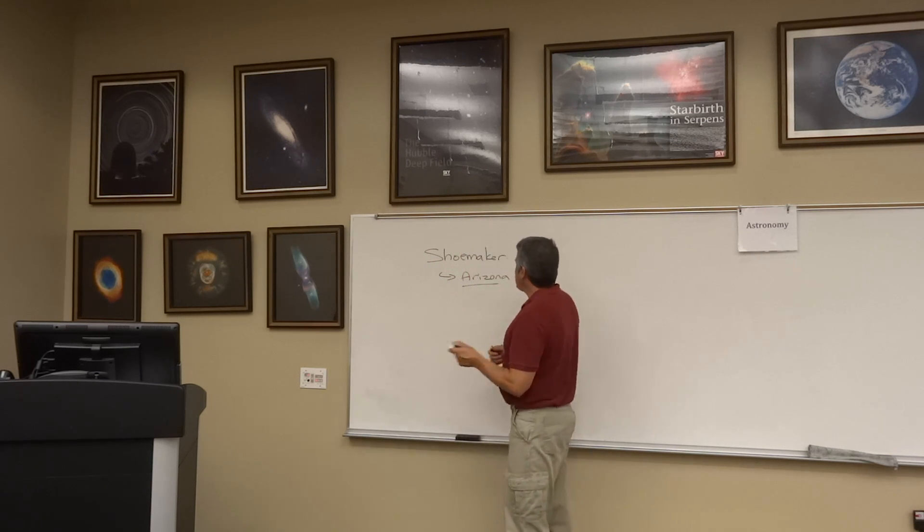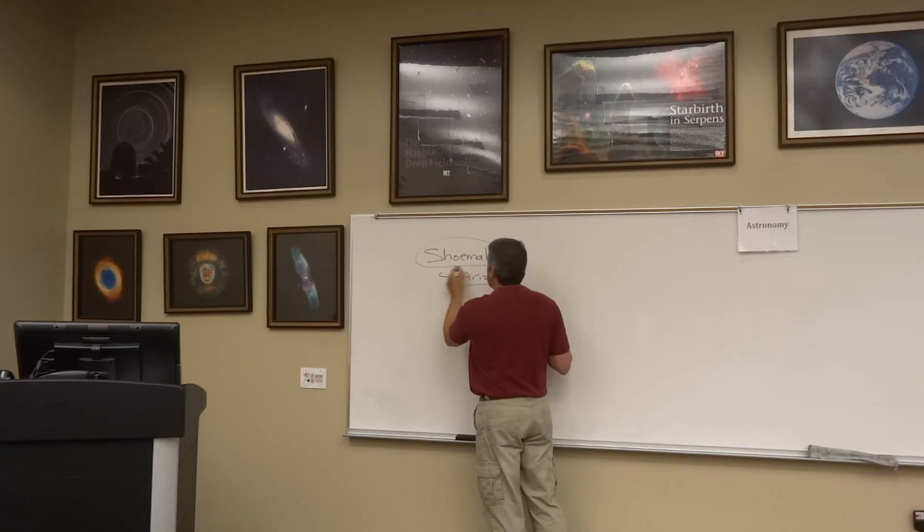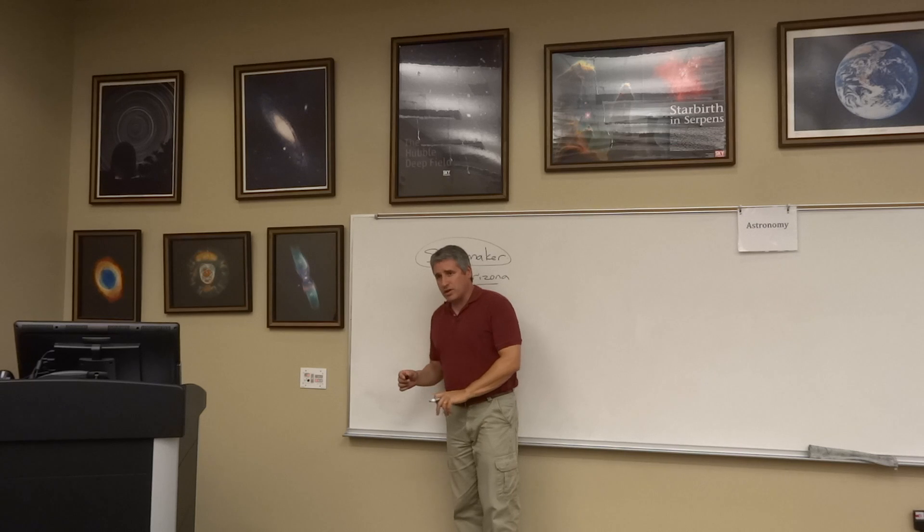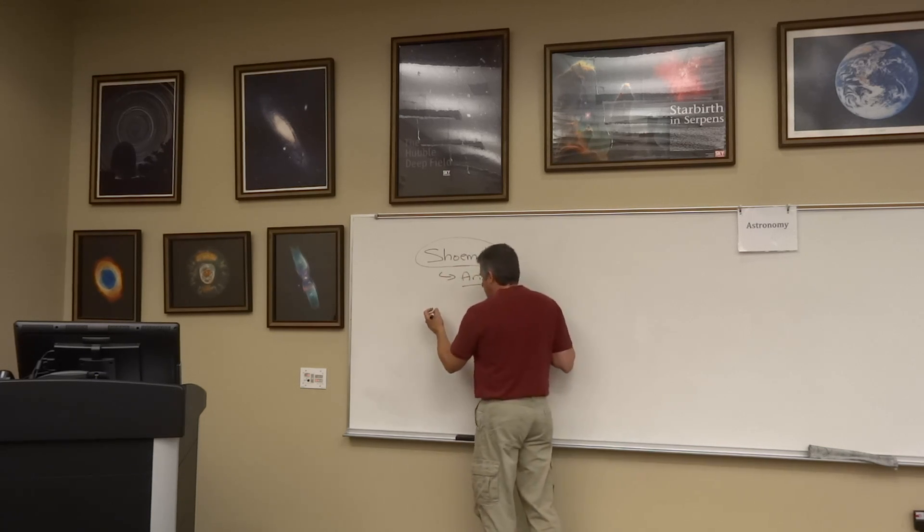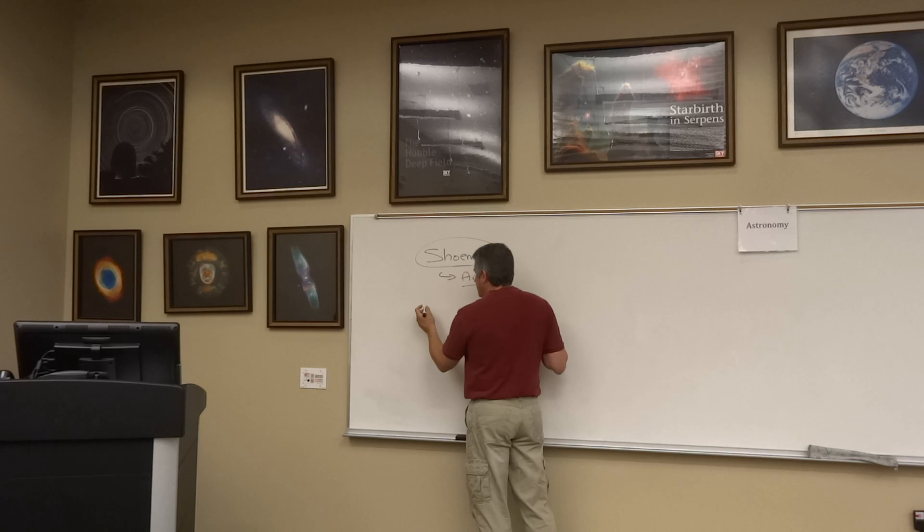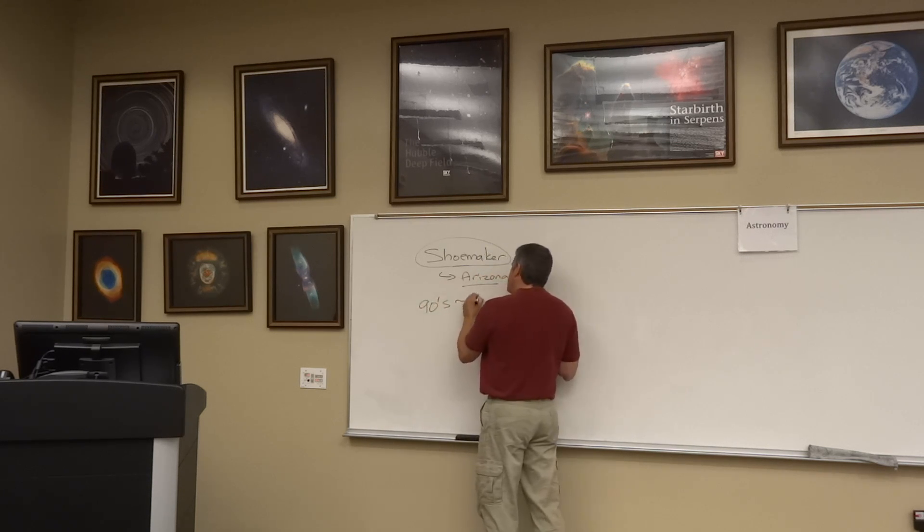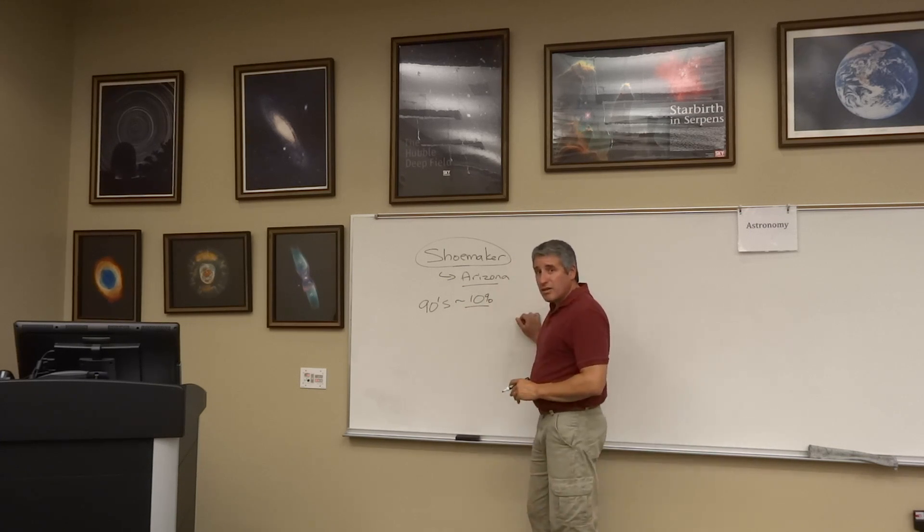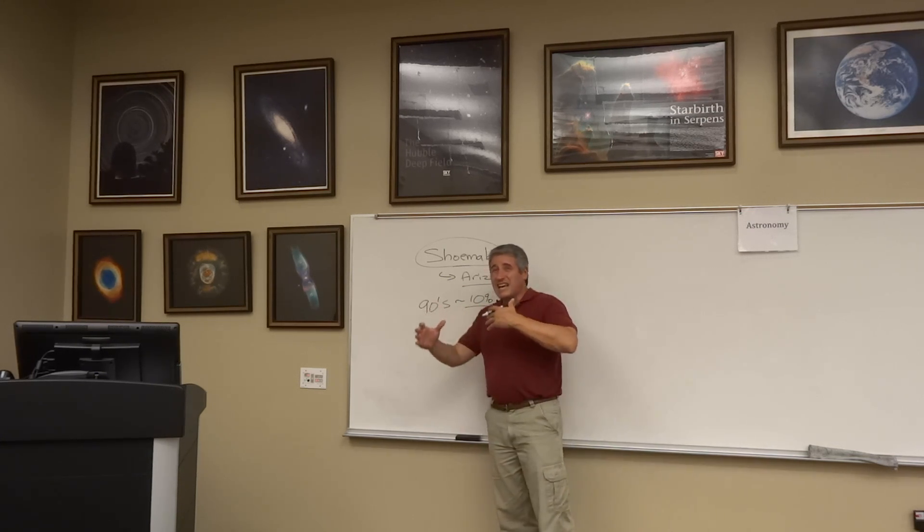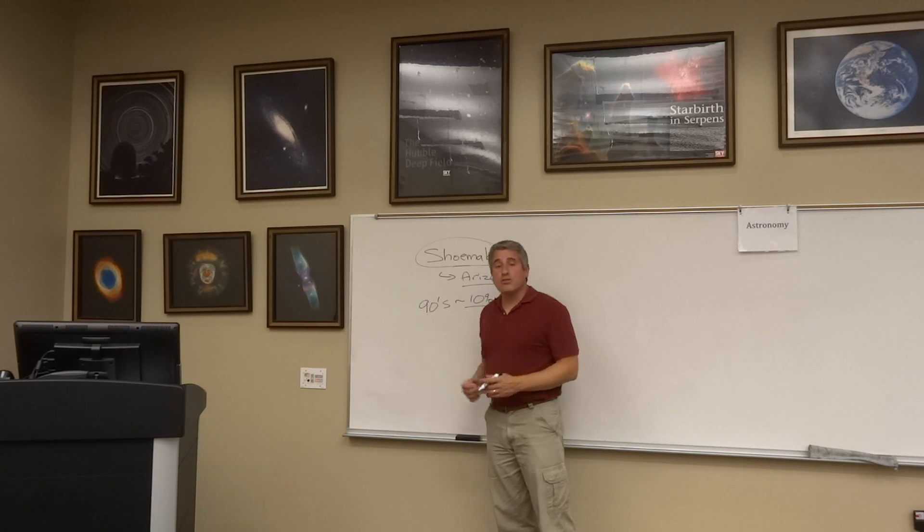So what are we doing to protect our planet from these potential impactors? Well, the first thing we've got to do is find these things. And as we discussed in class, this guy Eugene Shoemaker, who was doing his work along with his wife Carolyn, have detected a number of Earth-crossing asteroids. And in fact, during our discussion in class, we talked about in the 90s, we had only found about maybe 10% of the potential impactors that can strike the Earth.